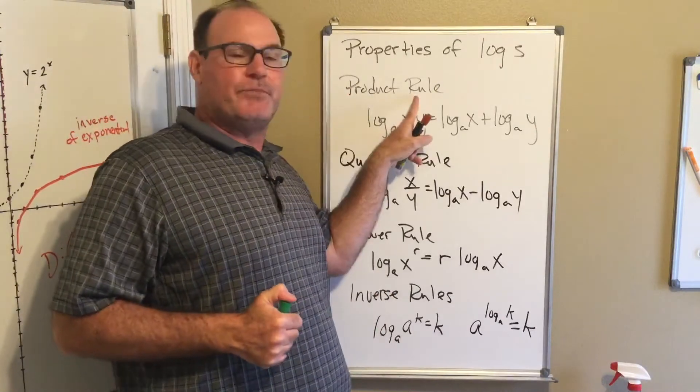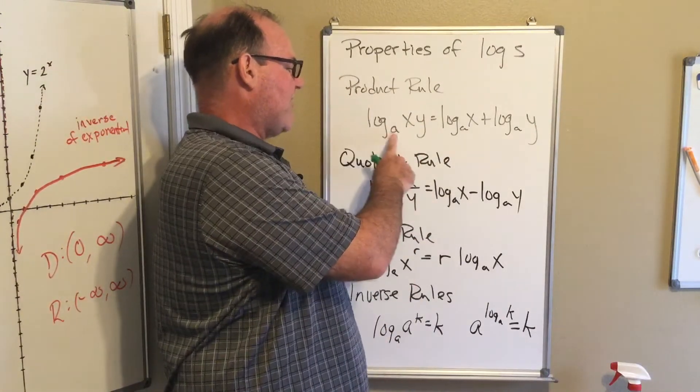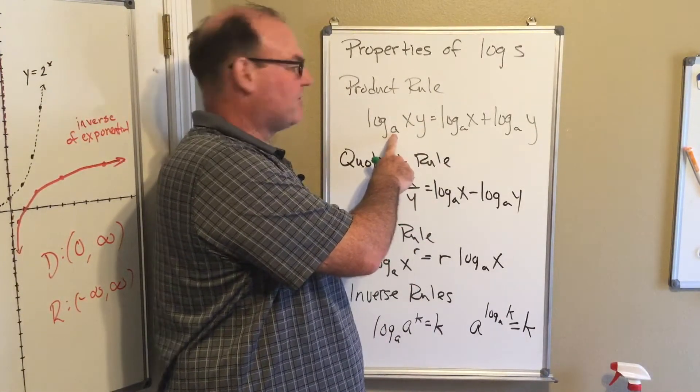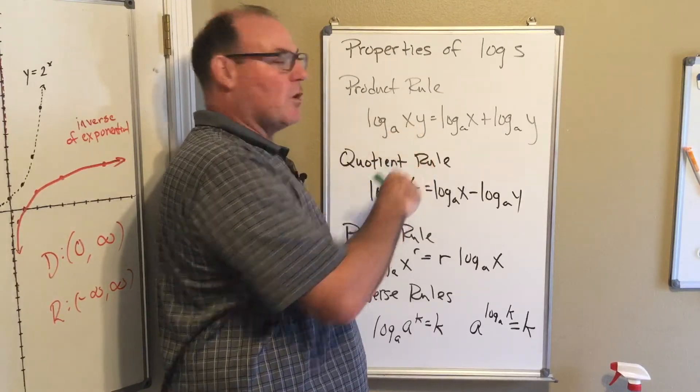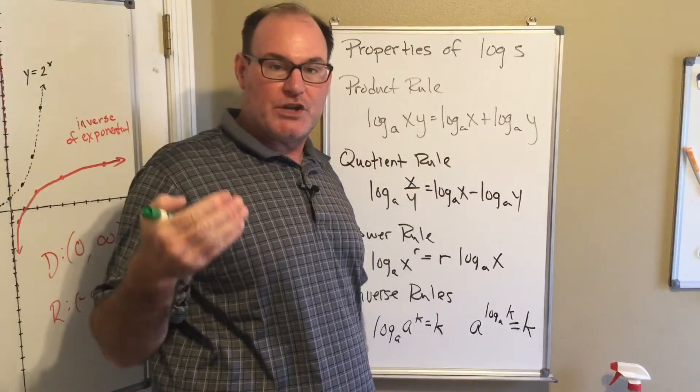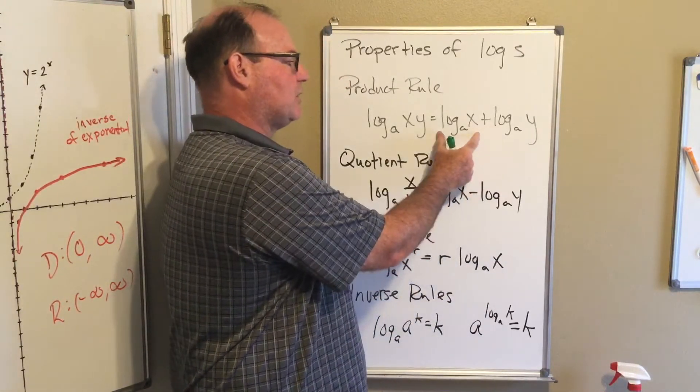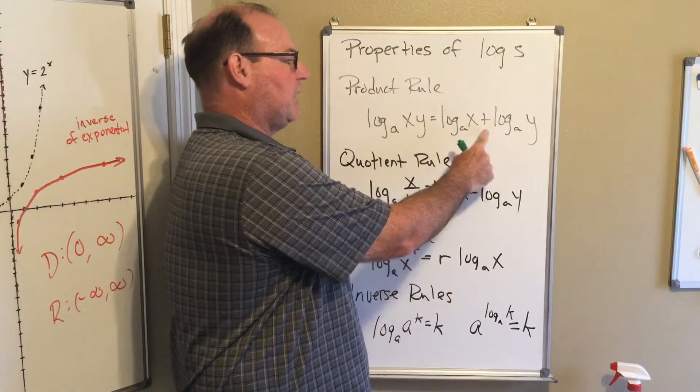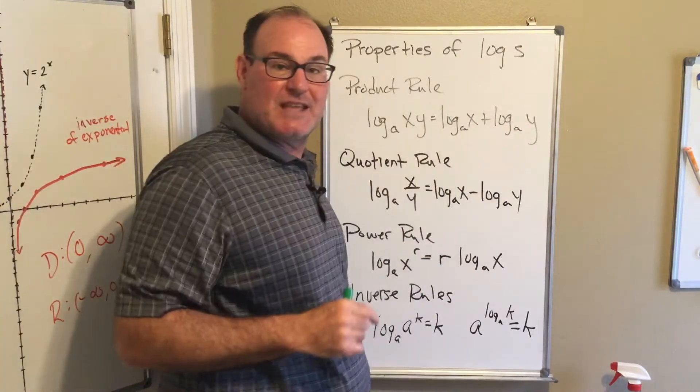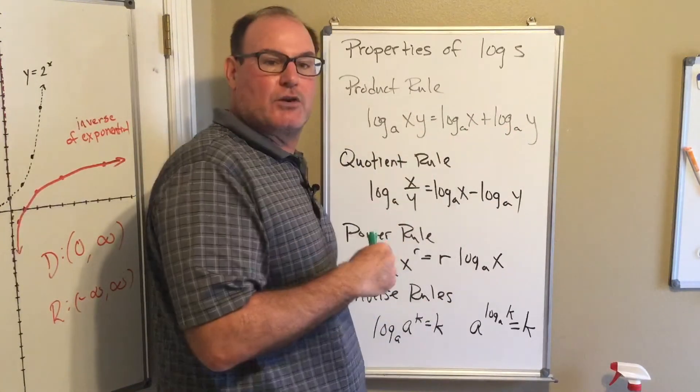So the product rule: if I have the logarithm of any base, any positive x times y, remember what do you do when you multiply? What do you do with the powers? You add them. So you can take the log base a of the first factor plus the log base a of the second factor. That is called the product rule.